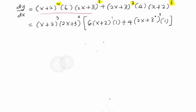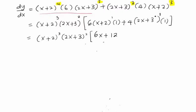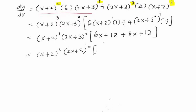Further simplifying, we have (x plus 2) to the power of 3 times (2x plus 3) squared, multiplied by the bracket. Expanding inside the bracket: 6 times (x plus 2) gives 6x plus 12, and 4 times (2x plus 3) gives 8x plus 12. Combining: 6x plus 8x gives 14x, and 12 plus 12 gives 24. So the final answer is (x plus 2) cubed times (2x plus 3) squared times (14x plus 24).